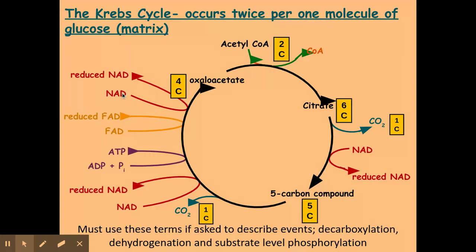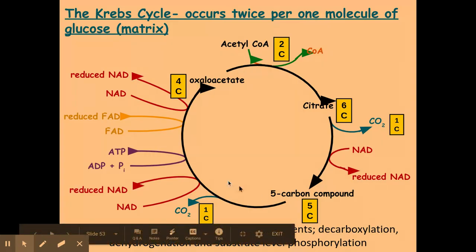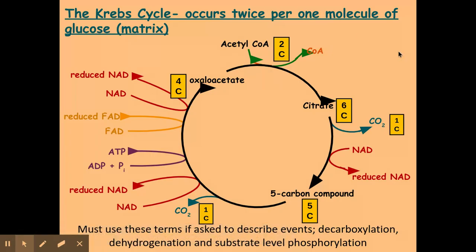Another molecule of NAD is also reduced by gaining a hydrogen and electron from the five carbon compound — so again further dehydrogenation occurs to produce oxaloacetate, and then the cycle starts again. Don't forget this cycle occurs twice per one molecule of glucose. You must be using the terms decarboxylation, dehydrogenation, and substrate level phosphorylation whenever you are describing or explaining what is going on in the Krebs cycle.